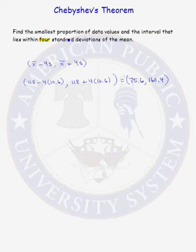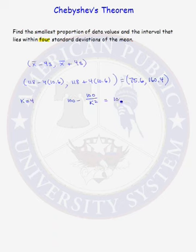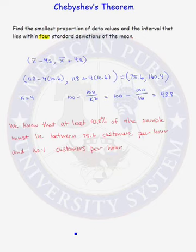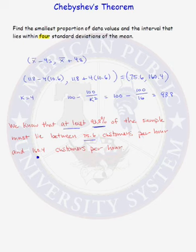Now we need to find the smallest proportion of data values that must lie within that interval. In this case, k equals 4, and we need to calculate 100 minus 100 over k squared, which is 100 minus 100 over 16, which is 93.8. We therefore know that at least 93.8% of the sample must lie between 75.6 customers per hour and 160.4 customers per hour.